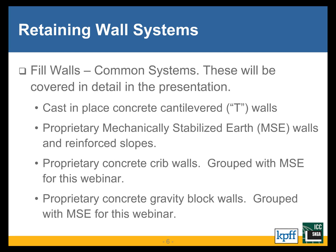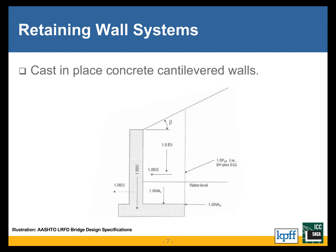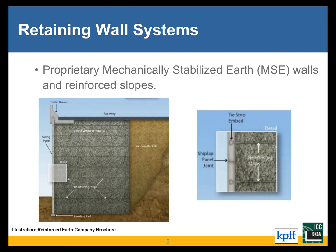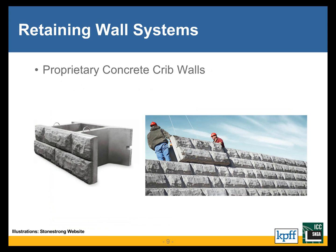On this first slide I'm listing out the relatively common systems — I'll have separate slides for each of them in the next section. Cast-in-place concrete cantilever walls are common. Mechanically stabilized earth, or MSE walls, which are proprietary wall systems that use horizontal reinforcing layers in the fill behind, are pretty common. Concrete crib walls are another proprietary system that's relatively common — they rely on their own mass, as well as fill placed within the compartments created within the concrete structure, to provide mass for stability.